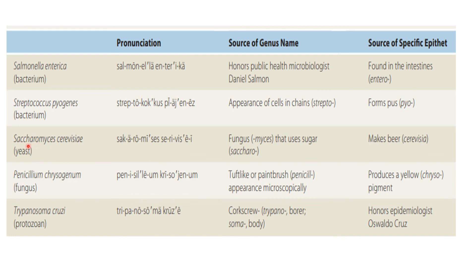Saccharomyces cerevisiae is a yeast — a fungus. Saccharomyces means sugar-eating, and cerevisiae refers to beer formation. Penicillium chrysogenum: penicillium refers to its tuft-like or paintbrush appearance under the microscope, and chrysogenum because of the production of yellow pigment. Trypanosoma cruzi: trypano means auger and soma means body — its body is screw-like. Cruzi is given in honor of the epidemiologist Oswaldo Cruz.